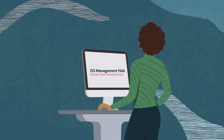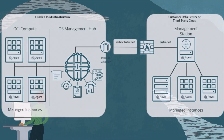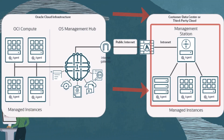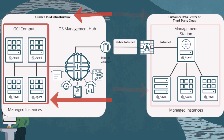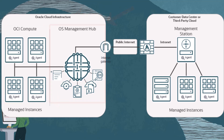Oracle OS Management Hub is used to manage and monitor updates and patches for Oracle Linux environments in private data centers, third-party cloud, and compute instances in Oracle Cloud Infrastructure, using the Oracle Cloud Infrastructure web console as a centralized management hub.